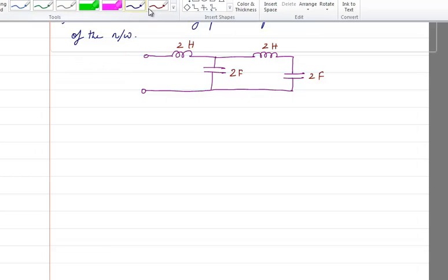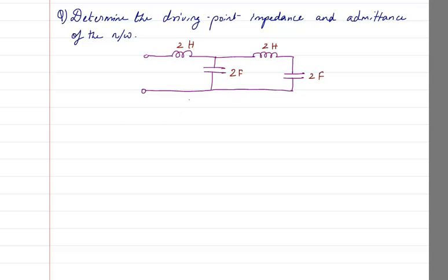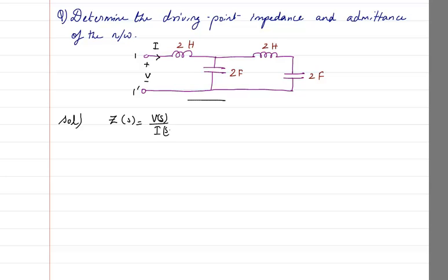So basically, what we have to do here is find out the driving point impedance, which is given by Z. Since it is a one-port network — we can have one port or two port network, but here there is only one port. So the voltage we will write as V and the current as I. We know that Z(s) is given as V(s) divided by I(s), and Y(s), the admittance, is given by I(s) divided by V(s), which is basically 1 divided by Z(s).